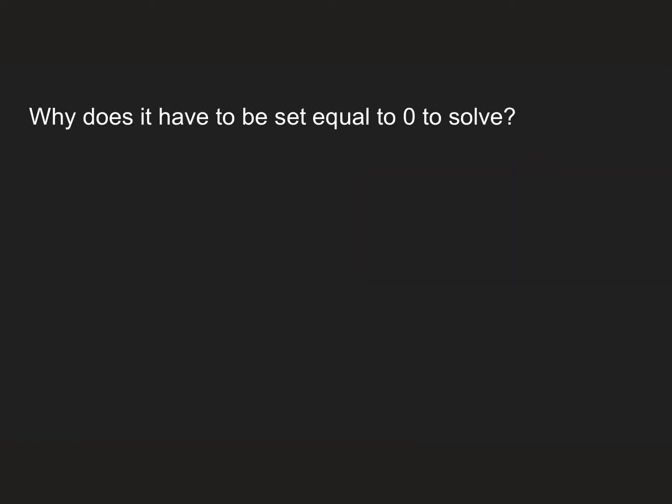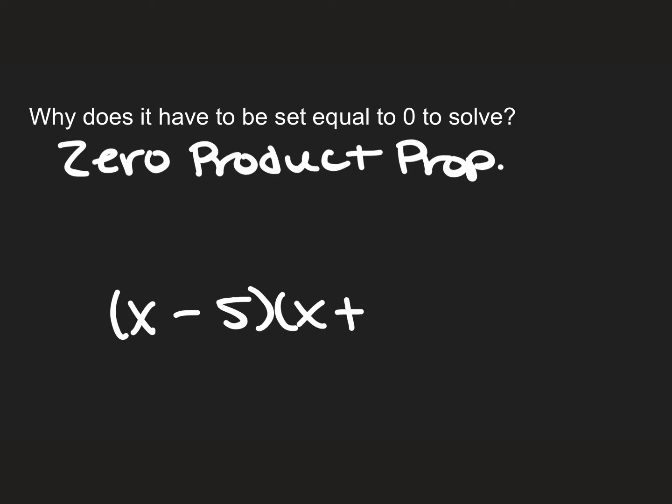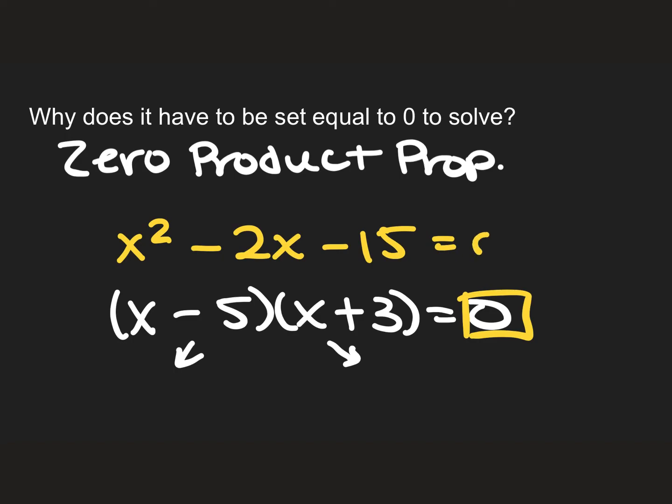The next question says, why does it have to be set equal 0 to solve? This idea of the zero product property is built off of that. In order to be able to factor and be able to apply that property, so like we had in that previous problem, if I had that (x - 5)(x + 3) = 0, we can only go through that process of writing that two equations if I know that this is equal 0 here. So as a result, my original problem always has to be equal 0. So if x² - 2x - 15 is 0, this has to be 0 here every single time in both places to be able to apply this to solve.